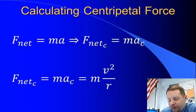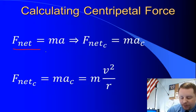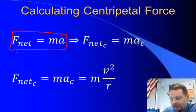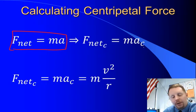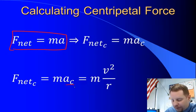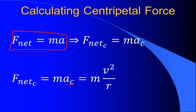Calculating centripetal force is straightforward. If the net force on an object by Newton's second law is equal to mass times acceleration, then the net force in the centripetal direction — toward the center of the circle — is equal to the mass times the centripetal acceleration. Since centripetal acceleration equals V squared over R, the net centripetal force must equal MV squared over R.